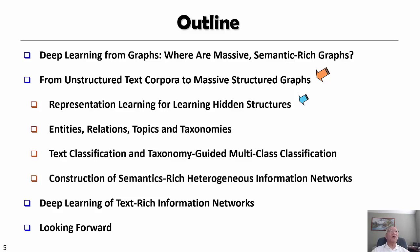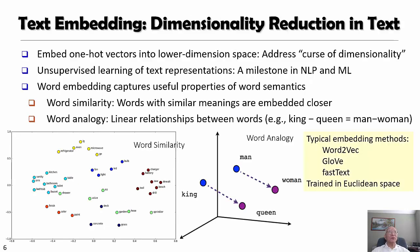Let's look at how we can construct massive structured graphs from unstructured text. In the early days, people were using one-hot vectors to represent a word — very high-dimensional and very sparse. In recent years, people have studied learning representations using distributed representation, mapping the high-dimensional space into relatively low-dimensional values. For example, Google's Word2Vec tries to use the surrounding context within a plus-or-minus k window to map words into a lower-dimensional space, like 100 to 200 dimensions.